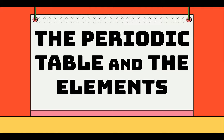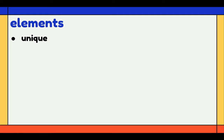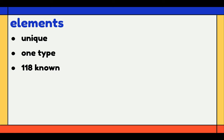In this video, we are going to talk about the periodic table and the elements. Recall that elements are unique and are made up of one type of atom. Right now, there are 118 known elements, and 92 of them are naturally occurring. Elements can have different numbers of protons and electrons, which explains all of the differences in the physical properties of matter.